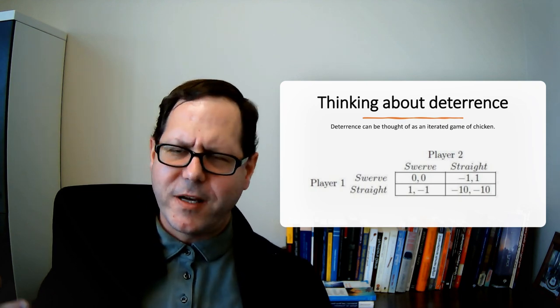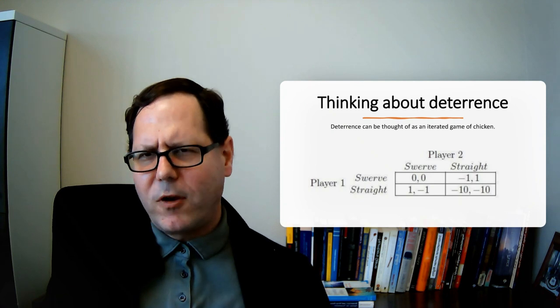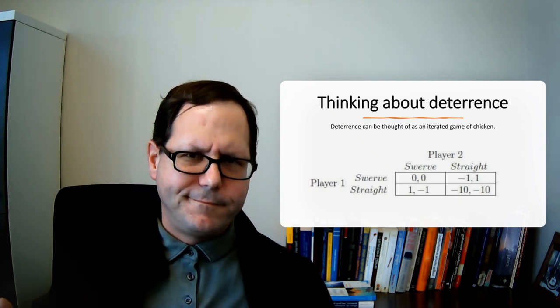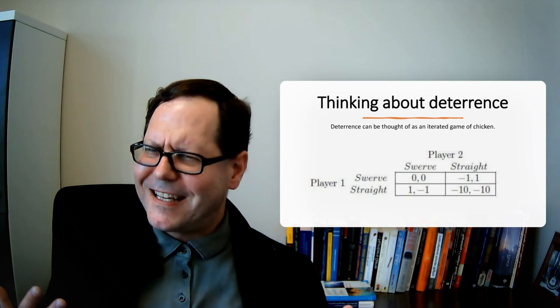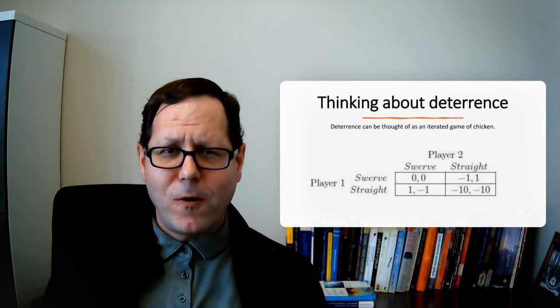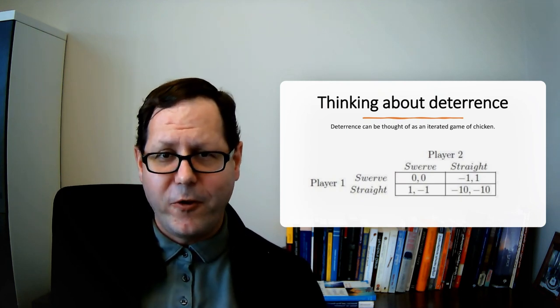If they both swerve, nobody crashes and they both kind of get out and the audience boos and they look a little chagrined. We'll count that as zero in our utility scores for the value that you get from this. The first zero goes to player one, the second zero goes to player two.